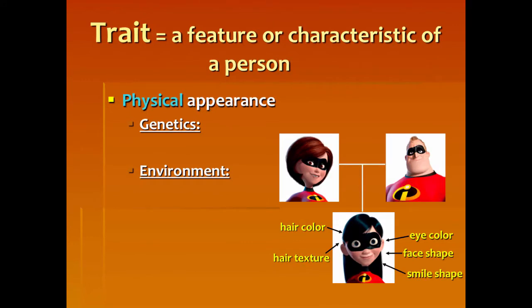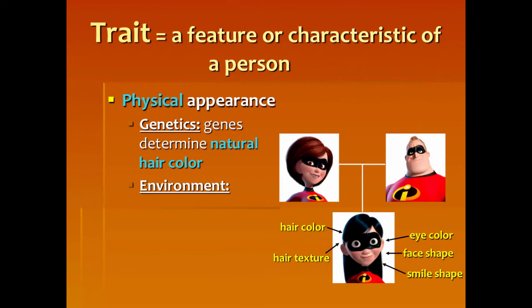When we talk about physical appearance, let's talk about how genetics plays a role. Genes determine natural hair color. A gene is part of our DNA that determines our physical traits — your hair color, your eye color, the shape of your face, the shape of your smile, the texture of your hair. The environment would be things like the sun or hair dye that changes your hair color.